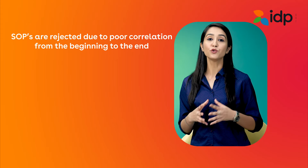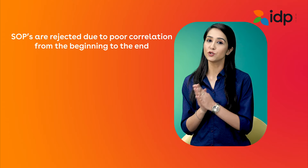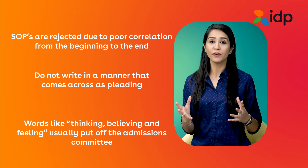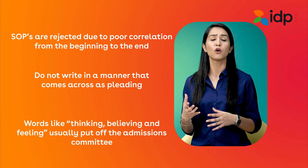Have clarity in your writing — don't make your SOP sound empty, vague, blank, or meaningless. Make sure you provide facts, reasons, or examples wherever possible. You must make sure that you write in a positive manner that shows you are not a dreamer but a firm believer who has clarity of your future goals. SOPs are majorly rejected due to poor correlation from the beginning to the end. Do not write in a manner that comes across as pleading. Words like 'thinking,' 'believing,' and 'feeling' usually put off the admissions committee. Never hide any information or give wrong facts in your SOP.